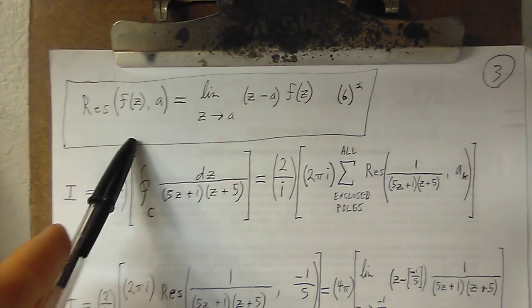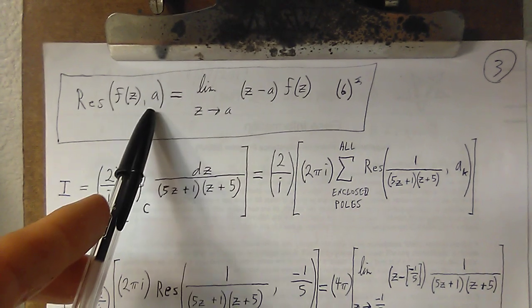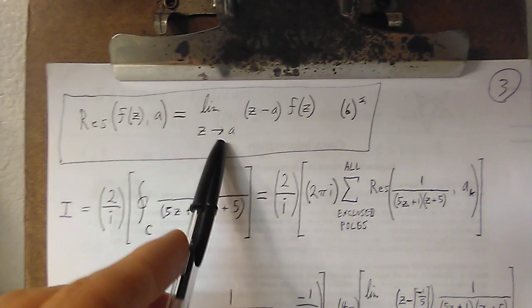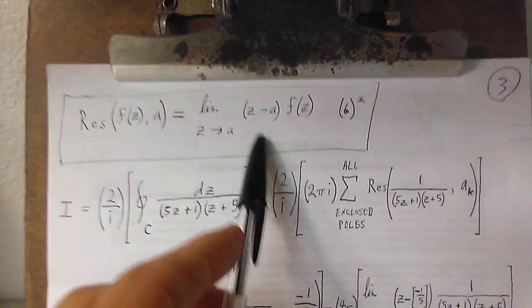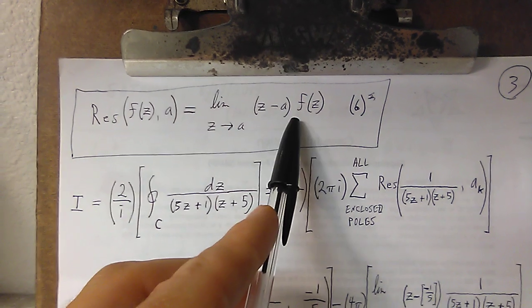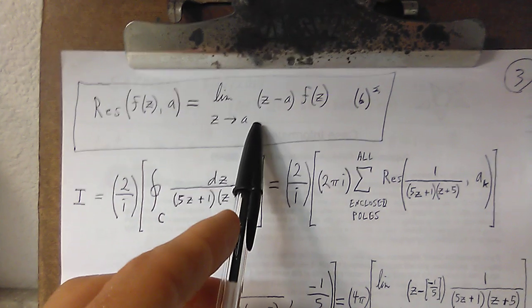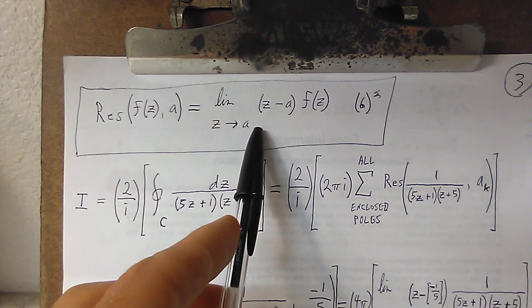Okay, so if f of z has a simple pole at a, the way we calculate the residue for f of z at a is just to multiply the function times z minus a and take the limit as z approaches a.